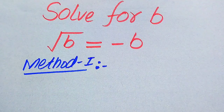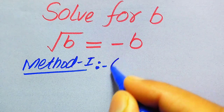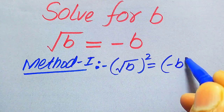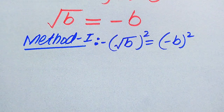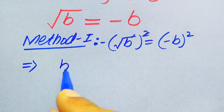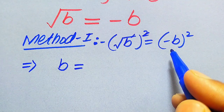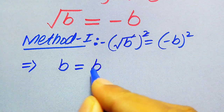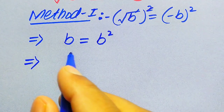In the first method, we need to remove the radical sign from the left-hand side. To do this, we square both sides. When we apply squaring on both sides, the square and the square root on the left cancel out, giving us b on the left. On the right-hand side we have minus b squared, and since minus b squared becomes positive, we get b equals b squared.